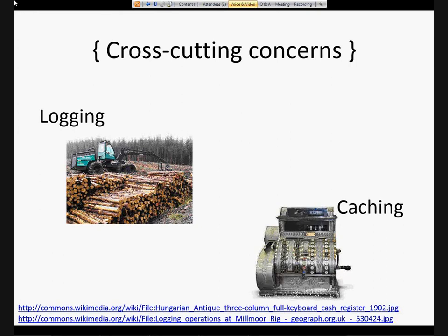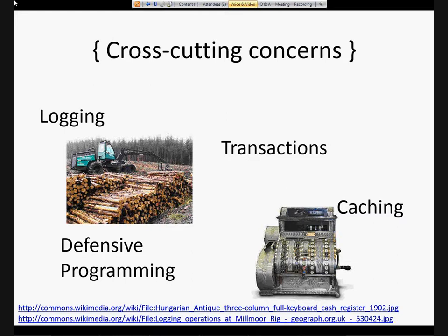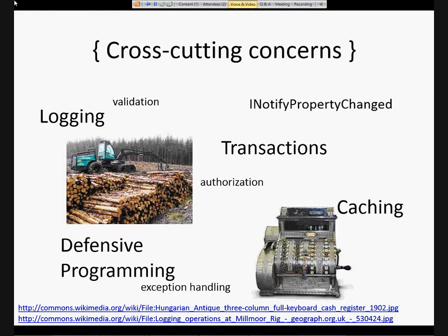Another example is caching — you may want caching at the UI level, the business level, or even the data level. Transactions, so when you do begin, commit, rollback, that's something that will take place in a lot of different places. Defensive programming — checking to see if a parameter is null, zero, or negative. INotifyPropertyChanged, if you've done desktop or mobile development, you might be familiar with the boilerplate from that. Authorization, validation, exception handling — these are all things that touch a lot of the features of your application across all the different layers.